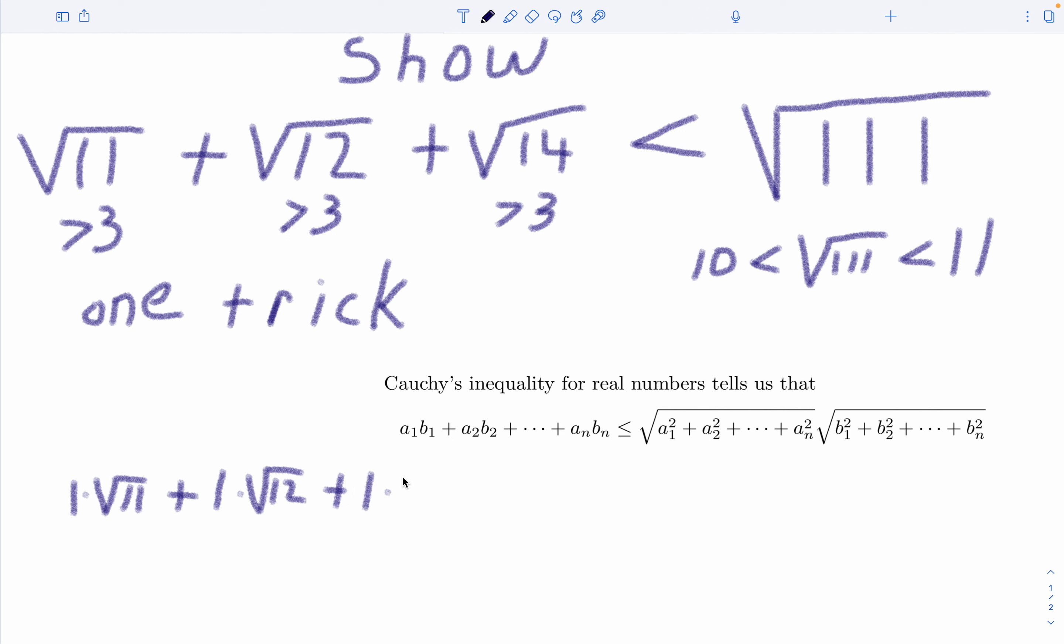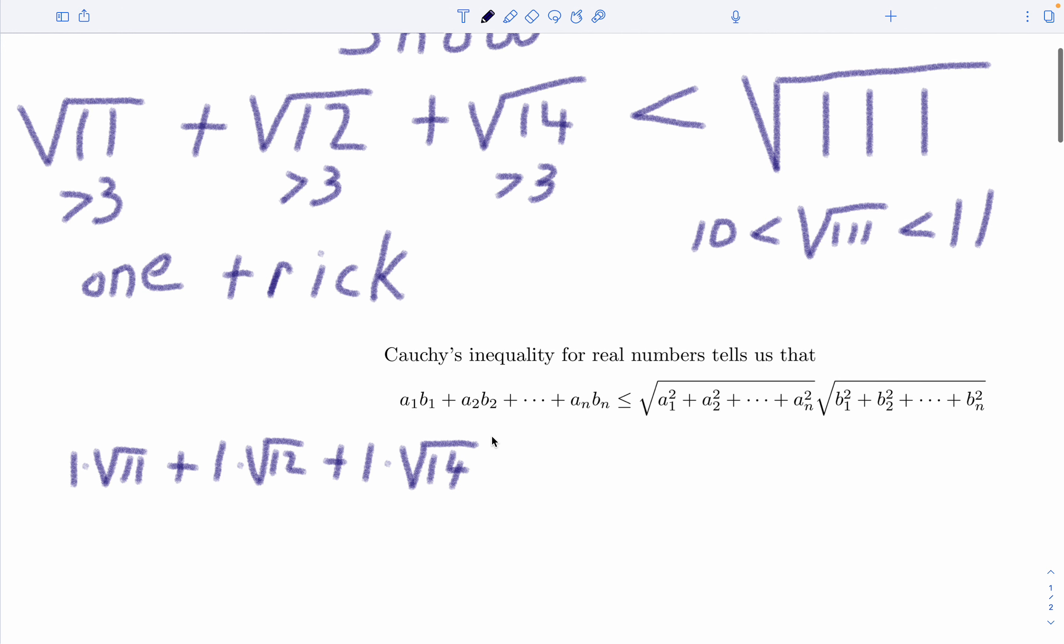Now you can see where that's got us, that's exactly this left-hand side here. The a sub i's are just a1, a2, a3 is 1, 1, 1, and then b1, b2, b3 is root 11, root 12, root 14.